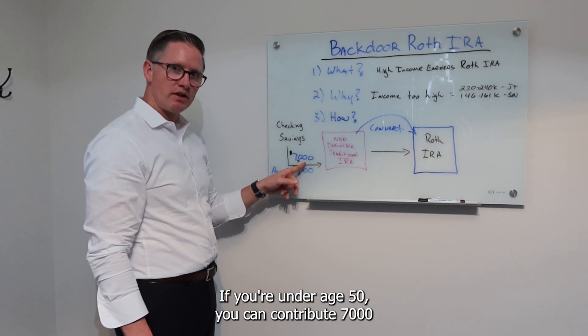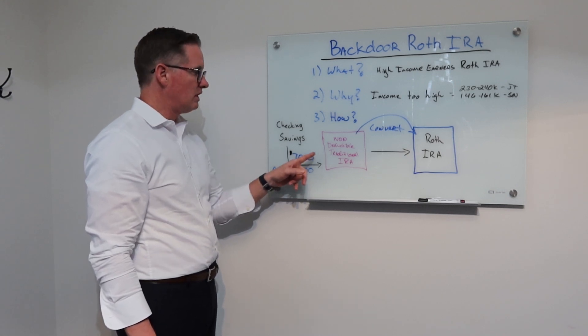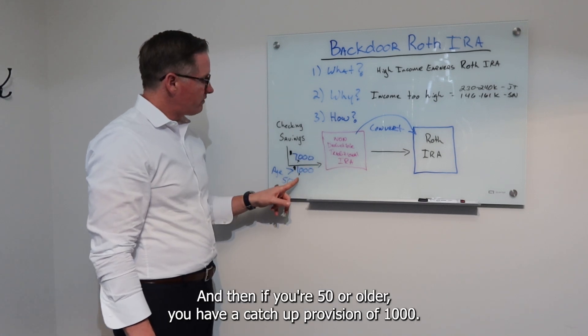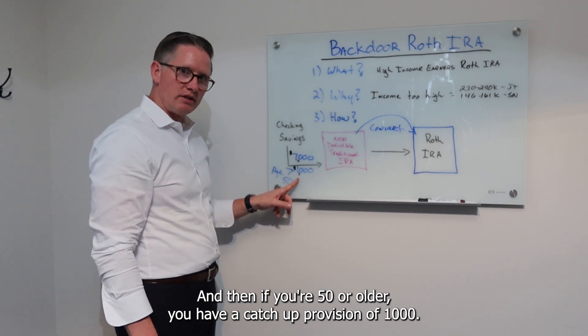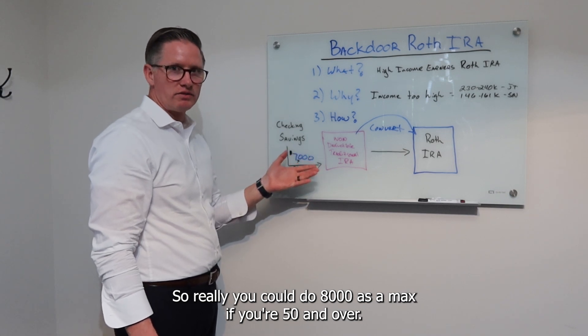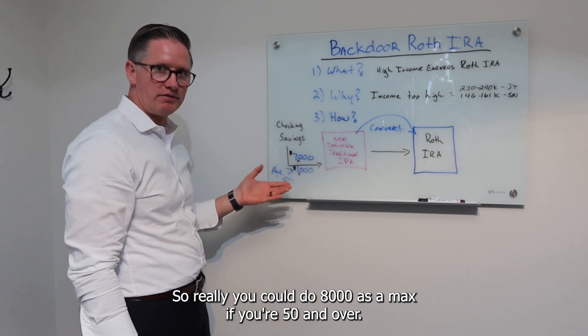If you're under age 50 you can contribute $7,000 into your non-deductible IRA, and then if you're 50 or older you have a catch-up provision of $1,000. So really you can do $8,000 as a max if you're 50 and older.